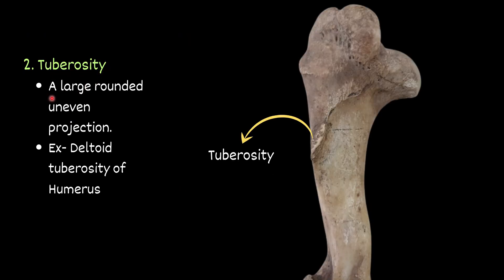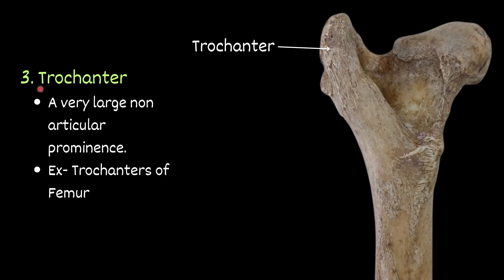Tuberosity — a large rounded uneven projection. For example, deltoid tuberosity of the humerus. You can see this structure — this structure is the tuberosity; specifically here it is the deltoid tuberosity of the humerus. Then trochanter — a very large non-articular prominence. For example, trochanter of the femur. You can see this structure — this is the trochanter of the femur.